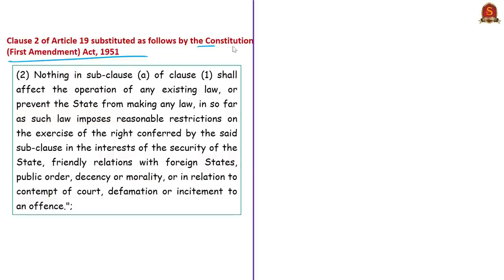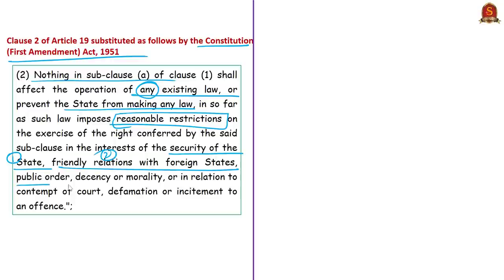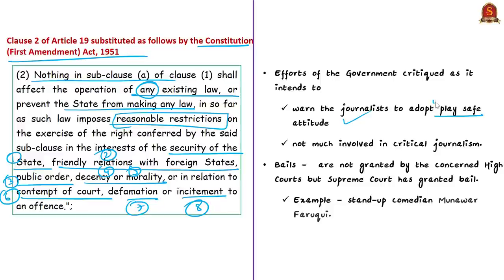The First Constitutional Amendment Act 1951 modified this as: nothing in this clause shall affect the operation of any existing law or prevent the state from making any law insofar as such law imposes reasonable restrictions on the right conferred by the said sub-clause — in the interests of security of state, friendly relations with foreign states, public order, decency or morality, or in relation to contempt of court, defamation, or incitement to an offense. Clause 2 was thus amended by the First Constitutional Amendment Act of 1951. The author states that the government's actions — including journalist arrests — are intended to cull down criticism and warn journalists to adopt a play-safe attitude. Bails were not being granted by high courts in several cases, but the Supreme Court has granted bail, as recently seen in the case of stand-up comedian Munawar.